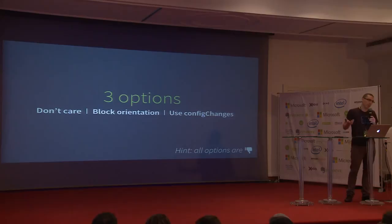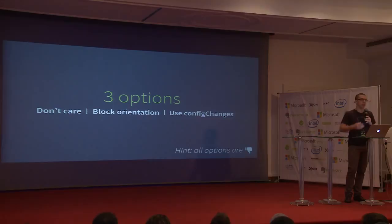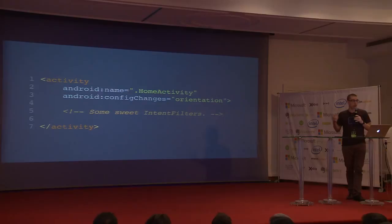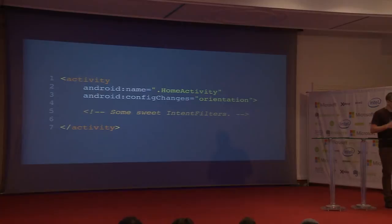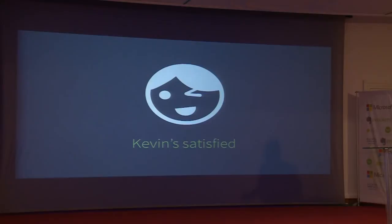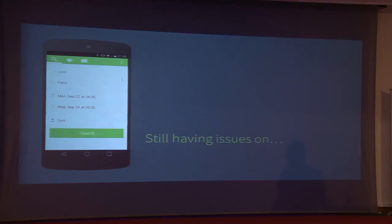Because Kevin is a newbie developer, he decided to go for the third solution: to prevent the system from killing the activity and re-creating it with the new configuration. In the Android manifest, you add a configChanges flag on your activity, telling the system you will handle orientation yourself. Kevin is satisfied and publishes the app. But after about one hour of availability on the Play Store, he starts receiving complaints — this time about language change.